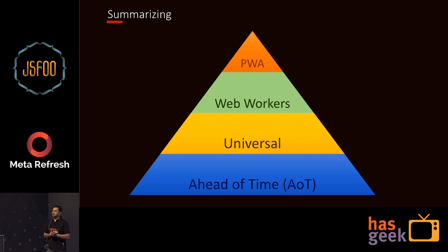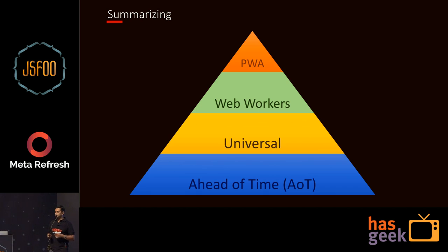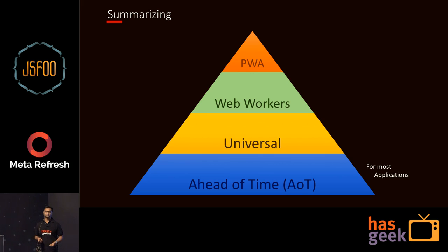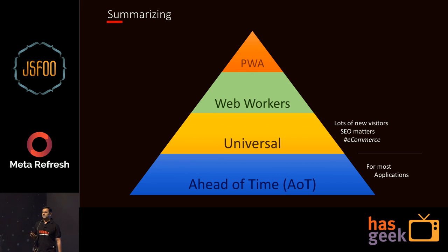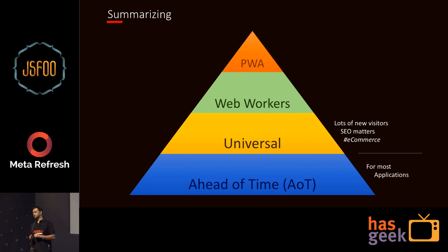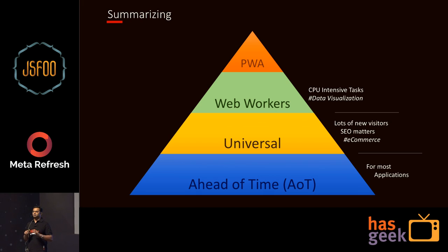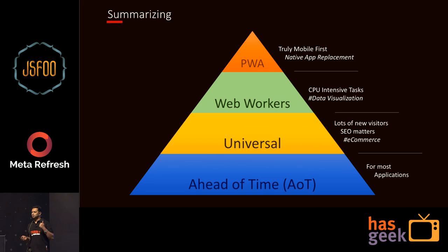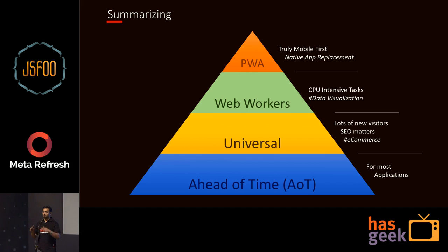Quickly summarizing: I would look at these topics as a pyramid of performance enhancements. AOT and tree shaking are something you should do for pretty much all apps — it's a no-brainer. Universal rendering becomes predominantly important for e-commerce sites, where there are many first-time visitors or content shared on social media needing link previews. Web workers are for when you're doing number crunching, data visualization, or building large dashboards. And PWA sits on top — if you're building a strongly mobile-first app or one that might replace a native app, go for the full stack.